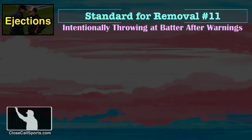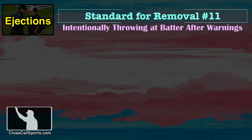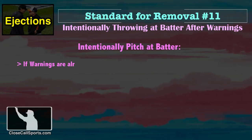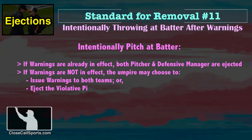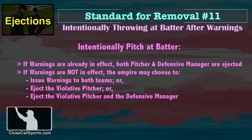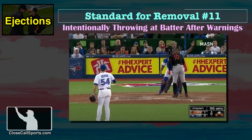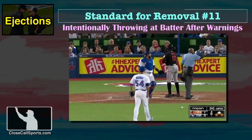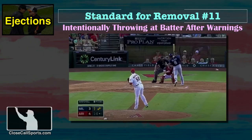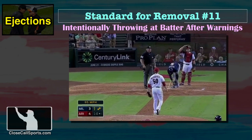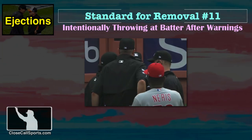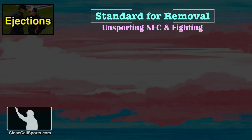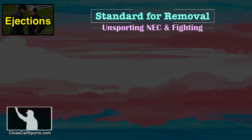The eleventh standard for removal is any combination of intentionally throwing at a batter with warnings already in effect, in which case the pitcher and defensive manager are ejected, or intentionally throwing at a batter with no warnings in effect if the umpire deems an ejection of the pitcher or the pitcher and the manager the proper punishment. Osuna's going to be thrown out — they're playing under a warning here. In recent years, the league has required umpires to convene prior to issuing any ejections for hit-by-pitch situations.